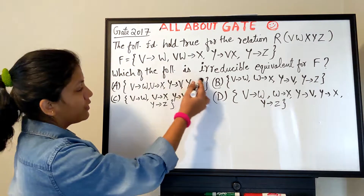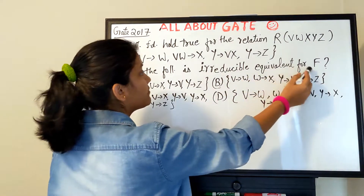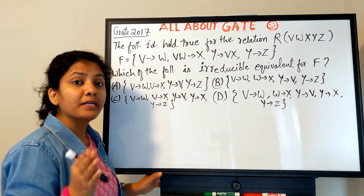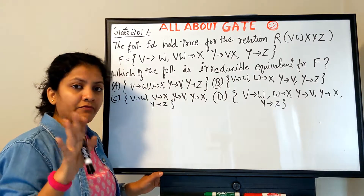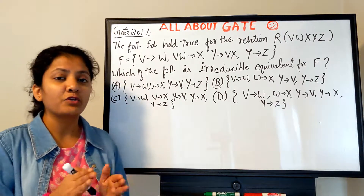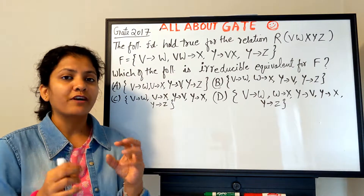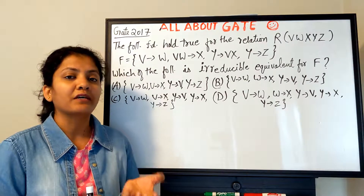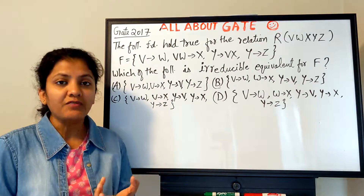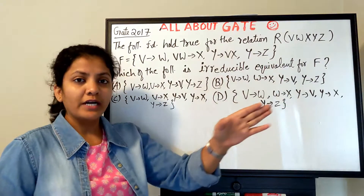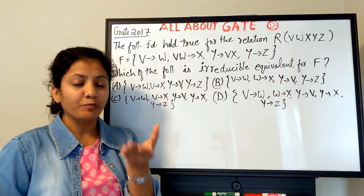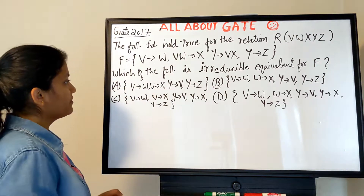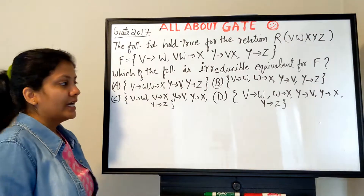The question asks: which of the following is an irreducible equivalent for F? The term 'irreducible equivalent' — irreducibleness means you cannot reduce it further. The minimal cover or canonical cover can also be known as irreducible cover or irreducible equivalent, because the power of F would remain the same as the power of the irreducible set you derive.